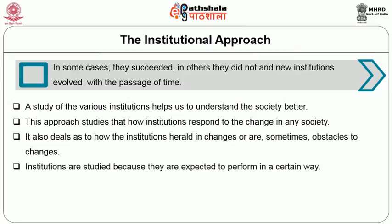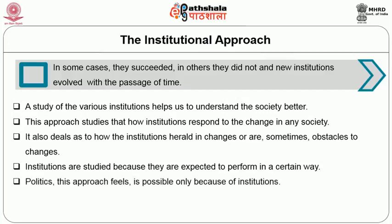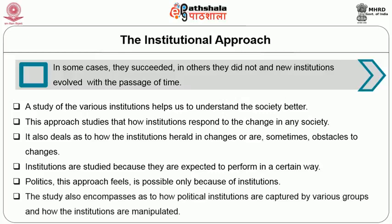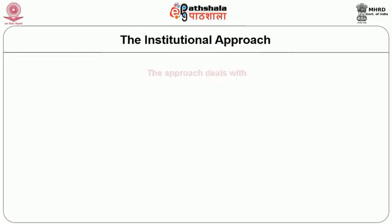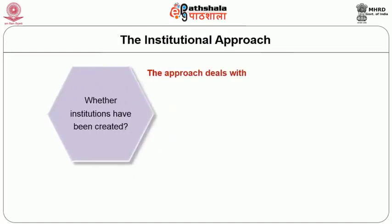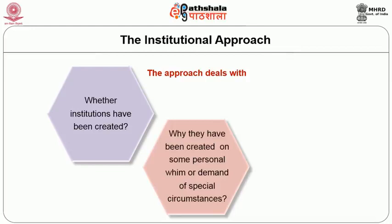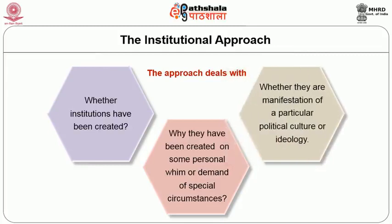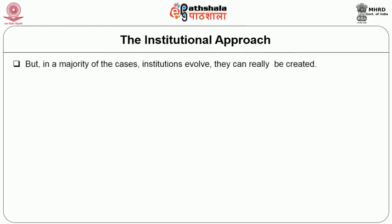Institutions are studied because they are expected to perform in certain ways. This approach feels that politics is possible only because of institutions. The study also encompasses how political institutions are captured by various groups and how the institutions are manipulated. The approach deals with whether institutions have been created, why they have been created — on some personal whim or demand of special circumstances — and whether they are manifestations of a particular political culture or ideology. But in a majority of cases, institutions evolved; they can rarely be created.